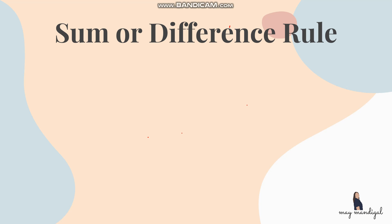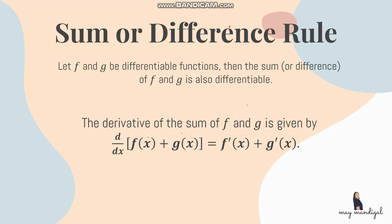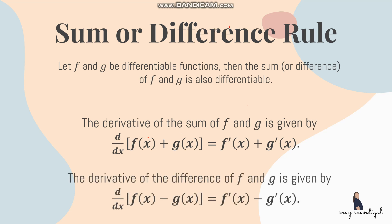The last rule is the sum or difference rule. If f and g are differentiable functions, then their sum or difference is also differentiable. The derivative of f plus g is f prime of x plus g prime of x — you get the derivative of each function and add them. This also applies to subtraction: the derivative of f minus g is f prime of x minus g prime of x. For functions with multiple terms connected by addition and subtraction, get each derivative individually and then add or subtract.